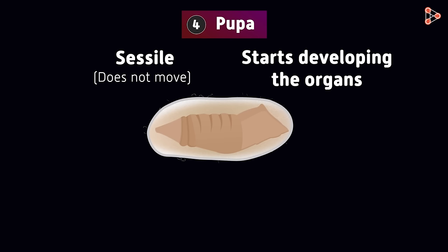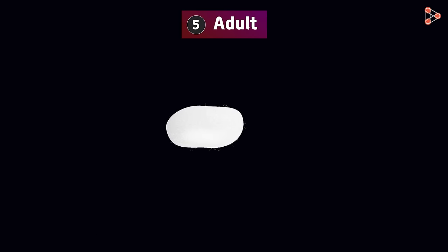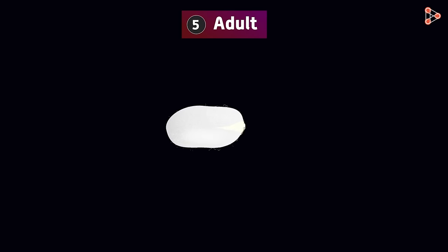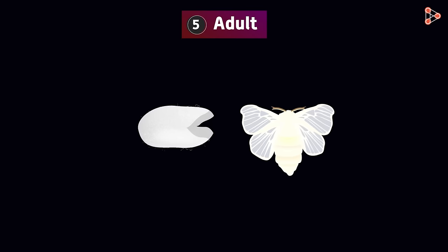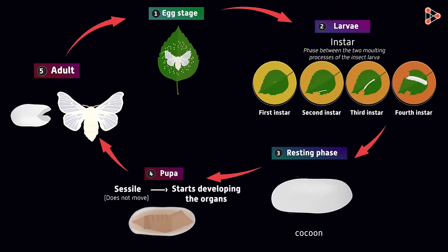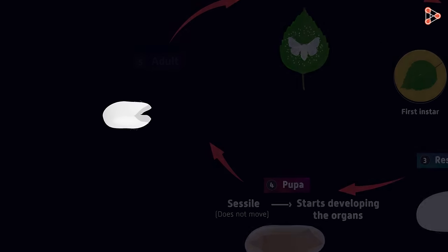After it develops completely, the next stage — that is the adult stage — is reached. The mature moth is now ready to break the cocoon and fly away. This is the complete life cycle of a silkworm. The cocoon is the main source of silk threads. Once the pupa develops into an adult and flies away leaving the cocoon behind, the cocoons can be collected and the threads are obtained.